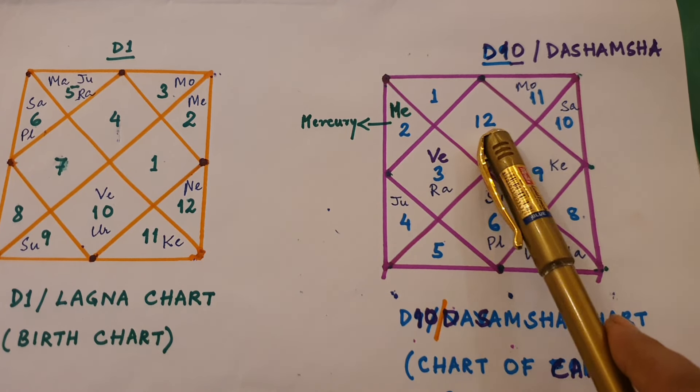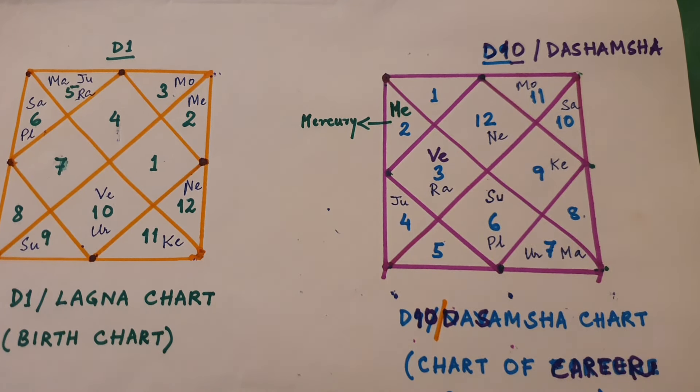Now friends, let's get started. Do subscribe to the channel and hit the all notification bell. Are you an Aries ascendant in your D10? That means, do you have the sign of Aries in your first house of the D10 chart? Let's look at what sort of results you can expect.